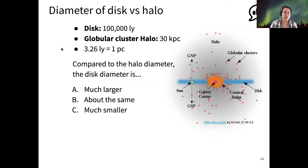Okay. I'm now seeing most votes for B, the disk size and the halo size are about the same. So again, this disk size was from our modern mapping estimate. The halo size was from Shapley's mapping with globular clusters in 1917. And yes, they are indeed about the same.